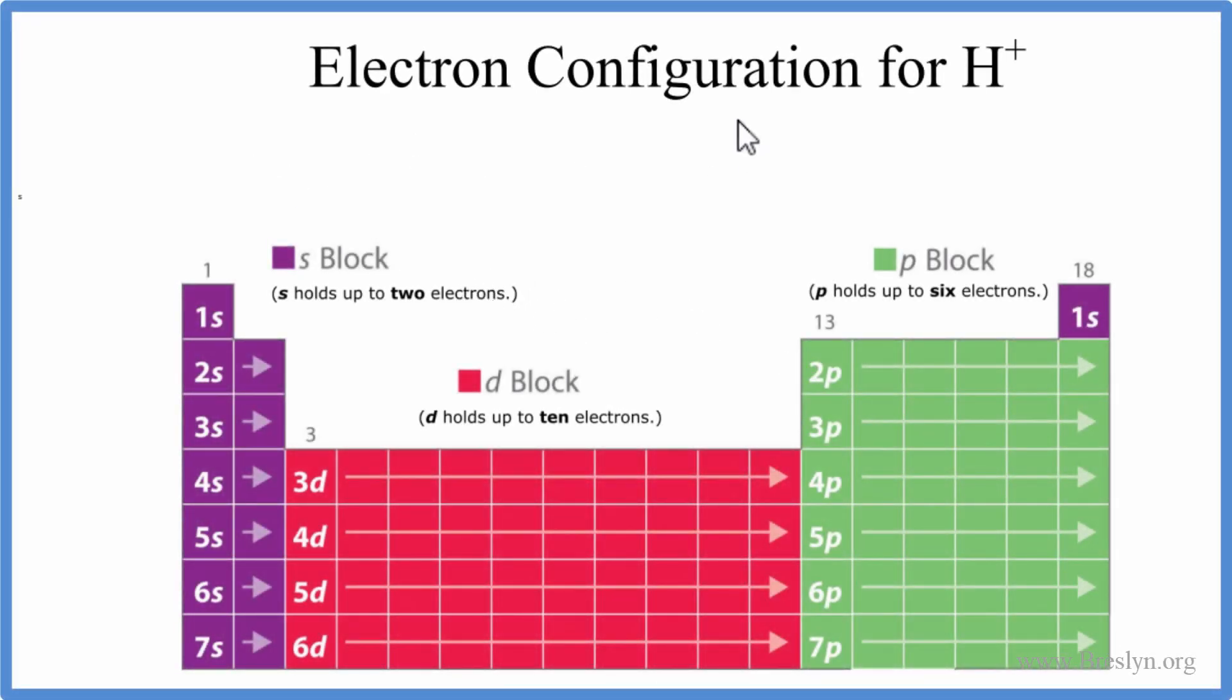In this video, we'll write the electron configuration for H+, that's the hydrogen ion. So to do that, we'll start out by writing the electron configuration for just hydrogen, as it appears on the periodic table.